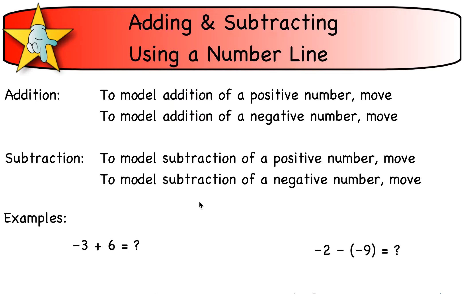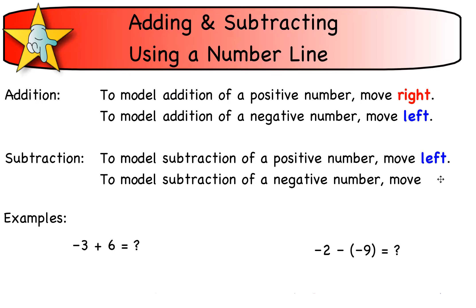Addition and subtraction on a number line. If we're adding a positive number on a number line, we're going to move right. If we're adding a negative number, we're going to move left. Subtraction does the exact opposite: if we're going to subtract a positive number, we move left, and if we're going to subtract a negative number, we move right.